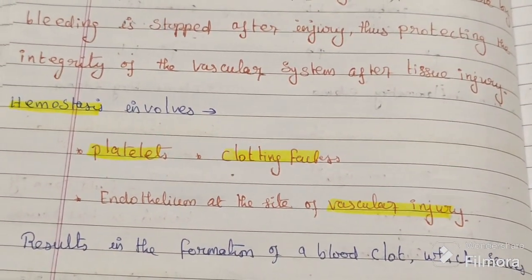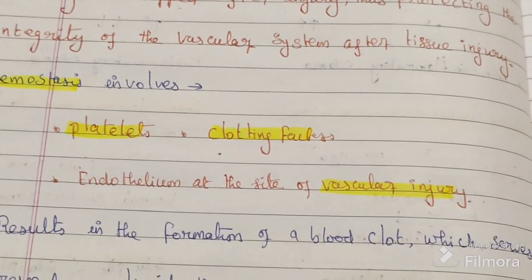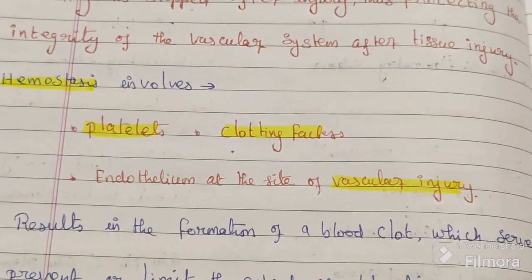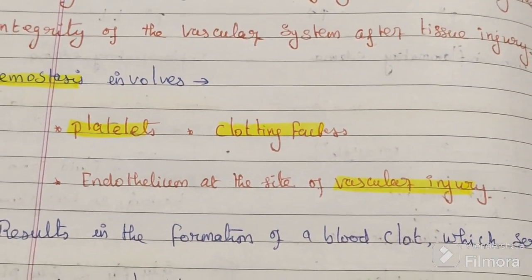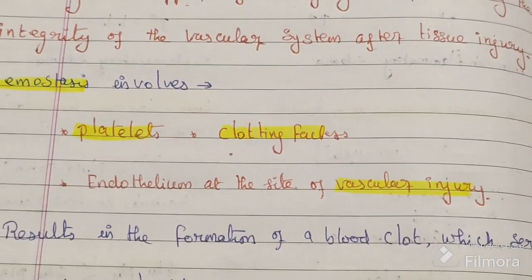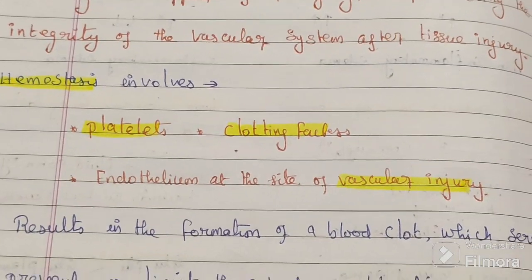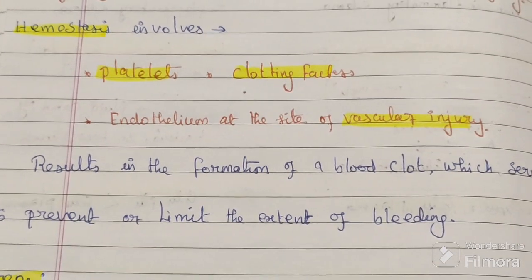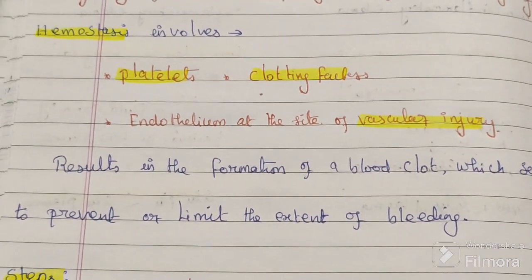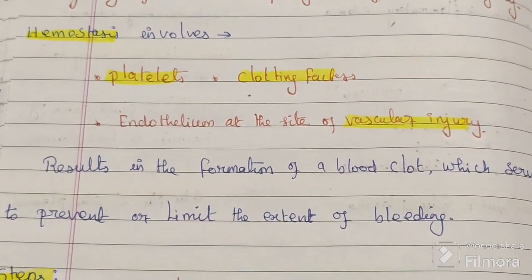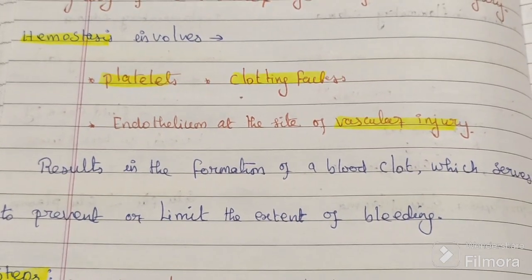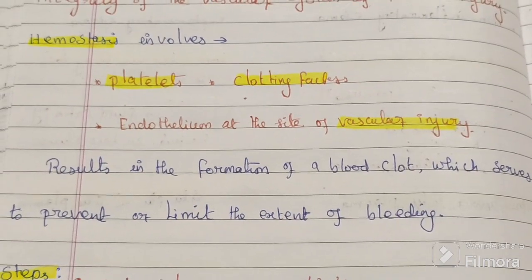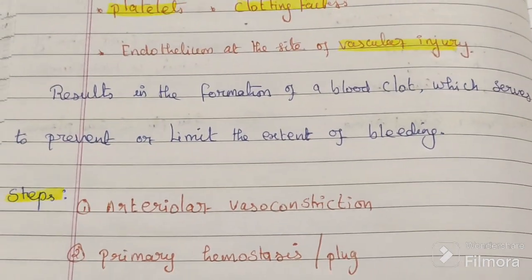Hemostasis involves platelets, clotting factors, and endothelium at the site of vascular injury, resulting in the formation of a blood clot, which serves to prevent or limit the extent of bleeding.